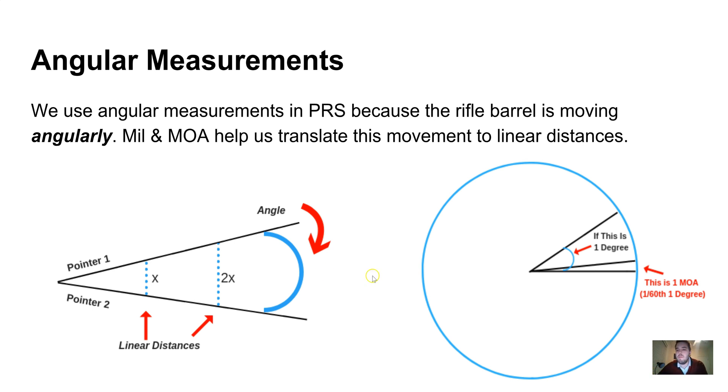Minutes of angle means just one 60th of one degree. That's literally all that it stands for, which is why it's called minutes, like 60 minutes in an hour and 60 seconds in a minute. If you imagine this circle and think of it as one degree, if you divide that into 60 parts, each one of those 60 parts is going to be one MOA.